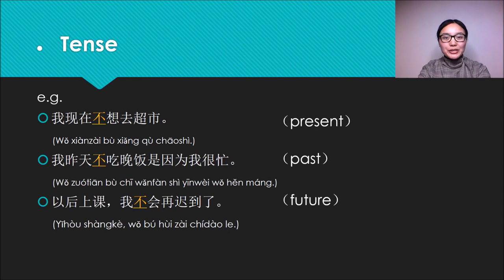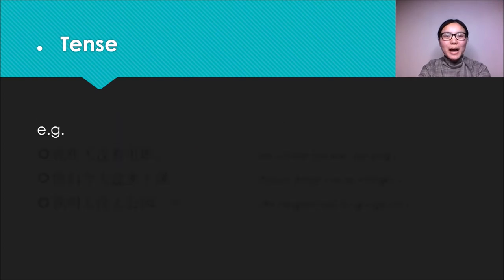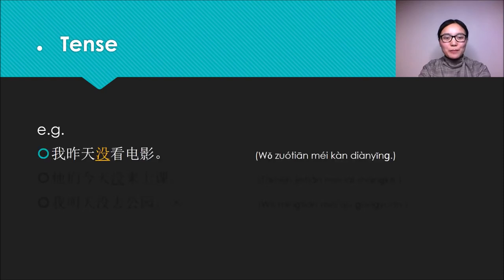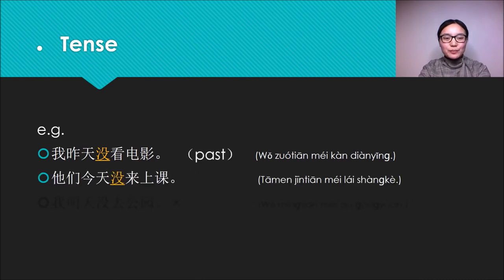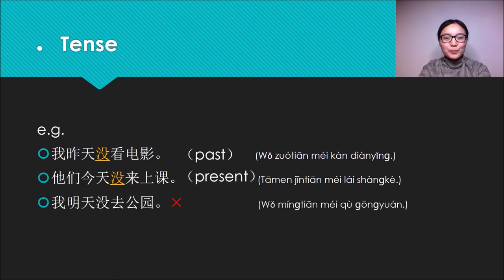Now it's about sentences with Mei. First one: 我昨天没看电影 (I didn't watch movie yesterday), so it's about past. Next one: 他们今天没来上课 (they haven't taken the classes today), so it's about present. The last one: 我明天没去公园 (I won't go to the park tomorrow) is wrong. Why? Because this sentence is about future tense, but Mei cannot be used in future tense.